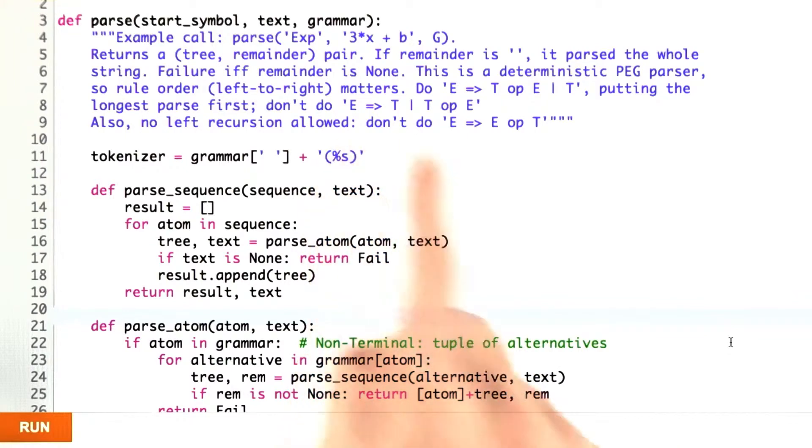Then parseSequence says we're just going to go through a sequence. This is a sequence of atoms. We're going to initialize our result to be the empty list. Then we're going to go through, try to parse an atom one at a time. If we get back nothing for a remainder, then fail. Otherwise, append to the result the tree that we built up by doing that parse and continue on in the loop. Notice that we're updating the text variable, so we're taking the remainder each time and parsing the next atom from the remainder of the previous atom.